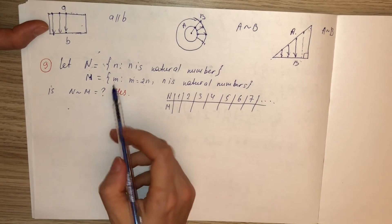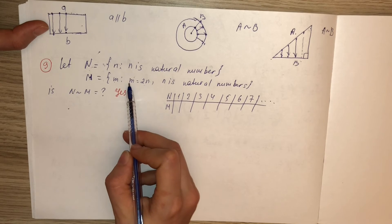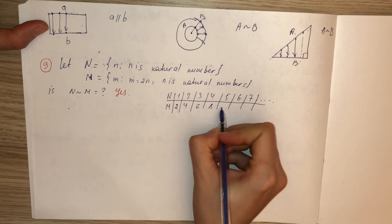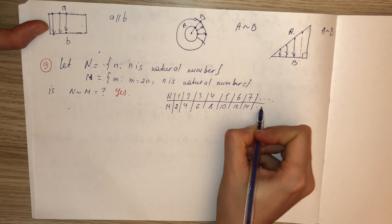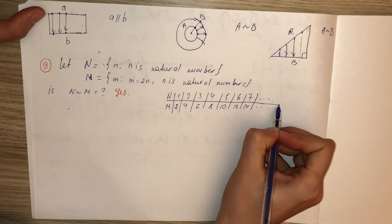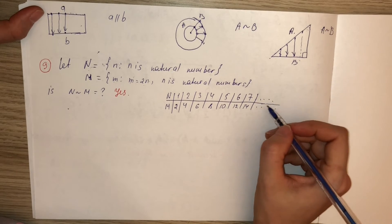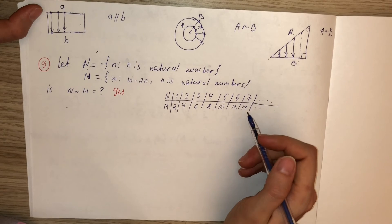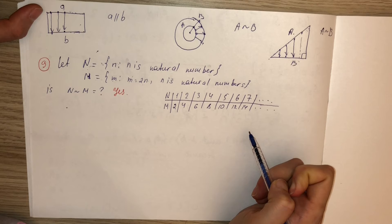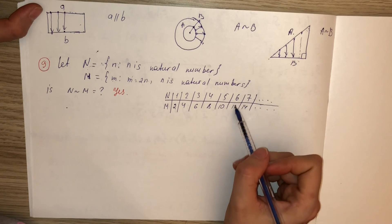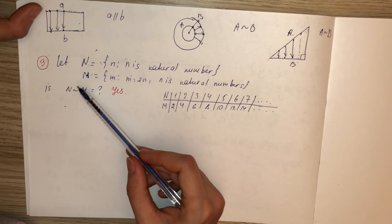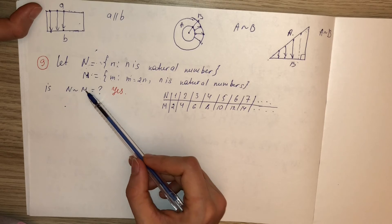M: 2, 4, 6, 8, 10, 12, 14, ... and it keeps going. No elements are repeated, and it is clear there is one-to-one correspondence between N and M. Since there is one-to-one correspondence, they are equivalent.